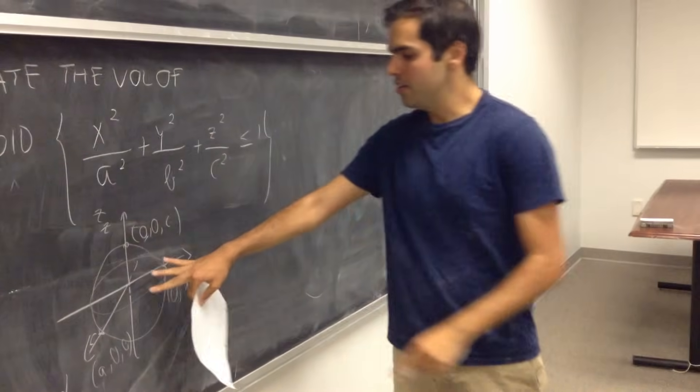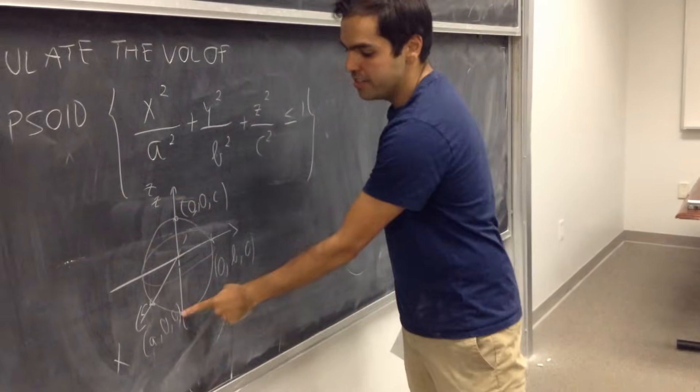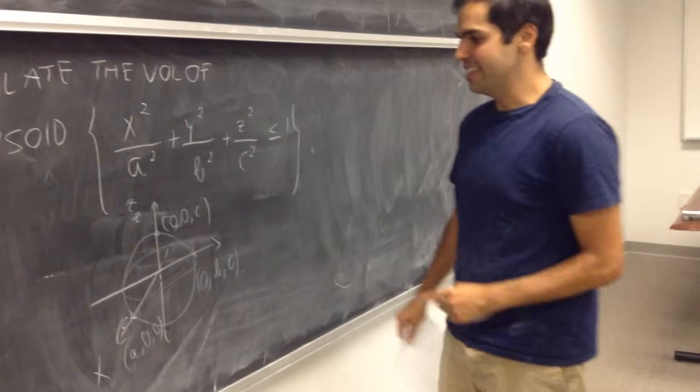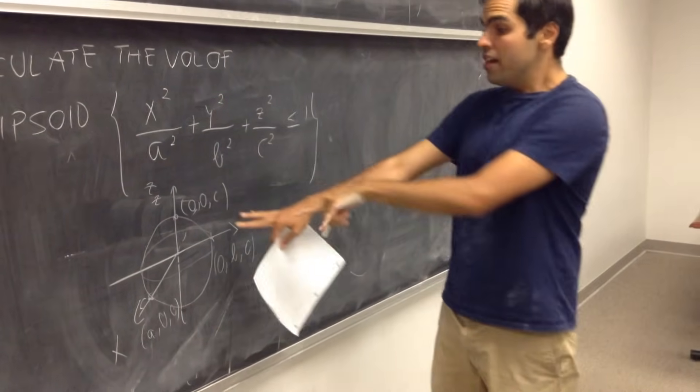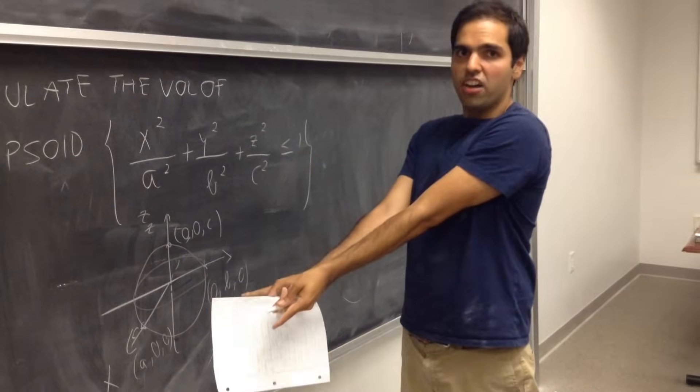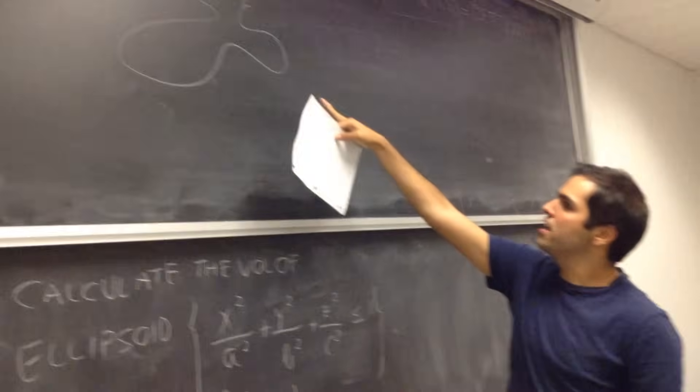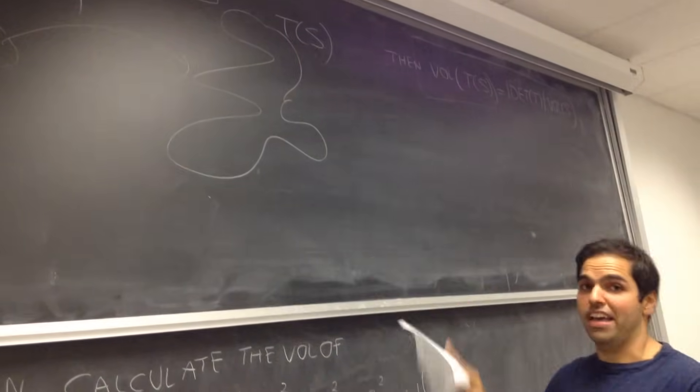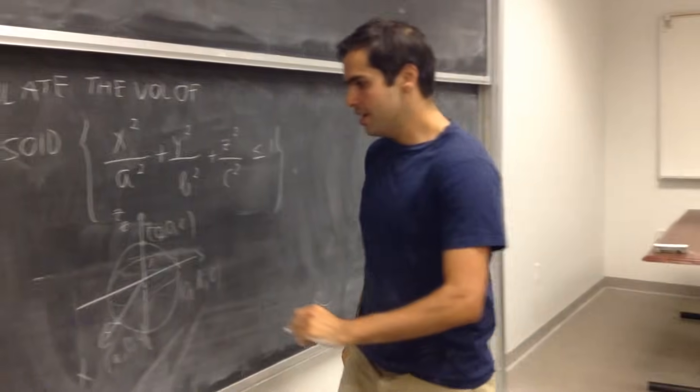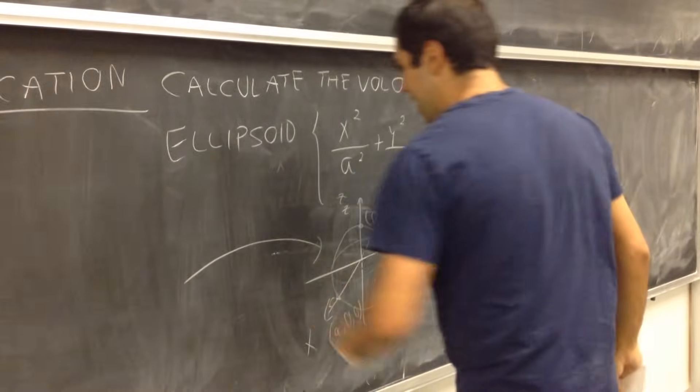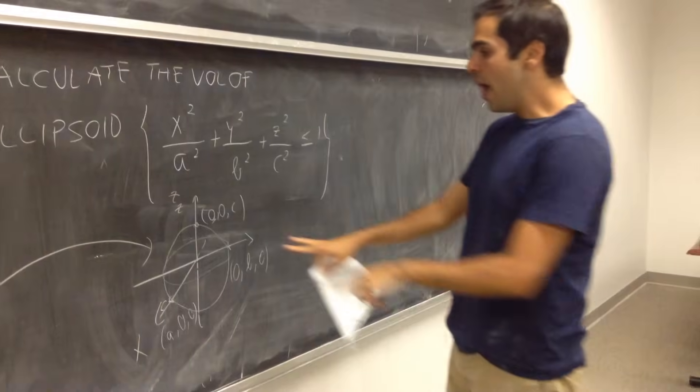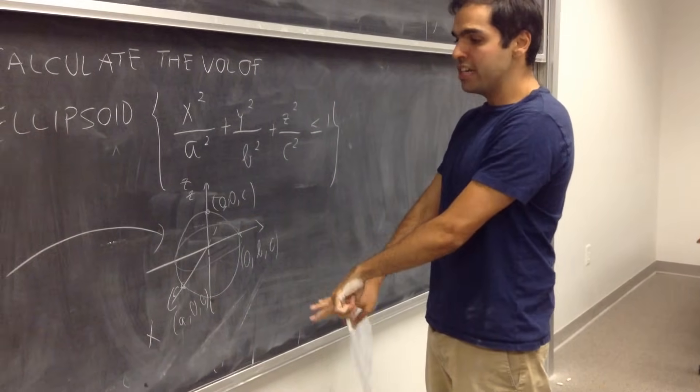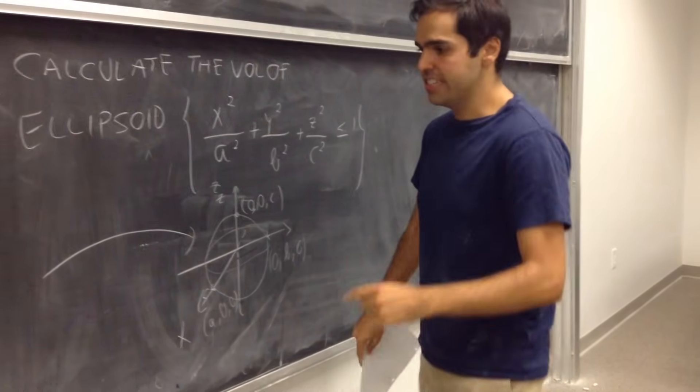Of course, with the other intercepts 0, 0, minus c, et cetera. And so, this is a very complicated object, and you're supposed to think about this as T of S for some S. And so, the question is, how can we compare this very complicated object with something very easy?